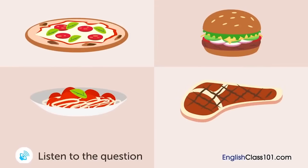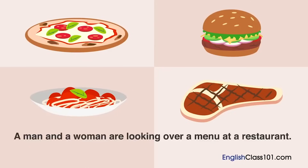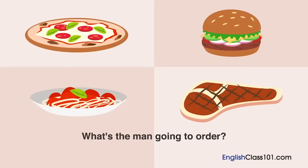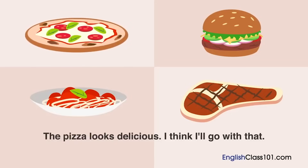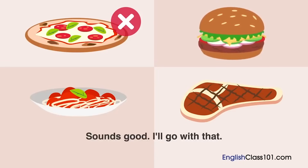A man and a woman are looking over a menu at a restaurant. What's the man going to order? — 'What are you going to order?' 'The pizza looks delicious. I think I'll go with that.' 'I had pizza yesterday, so...' 'Okay then. What about the hamburger?' 'Sounds good. I'll go with that.'